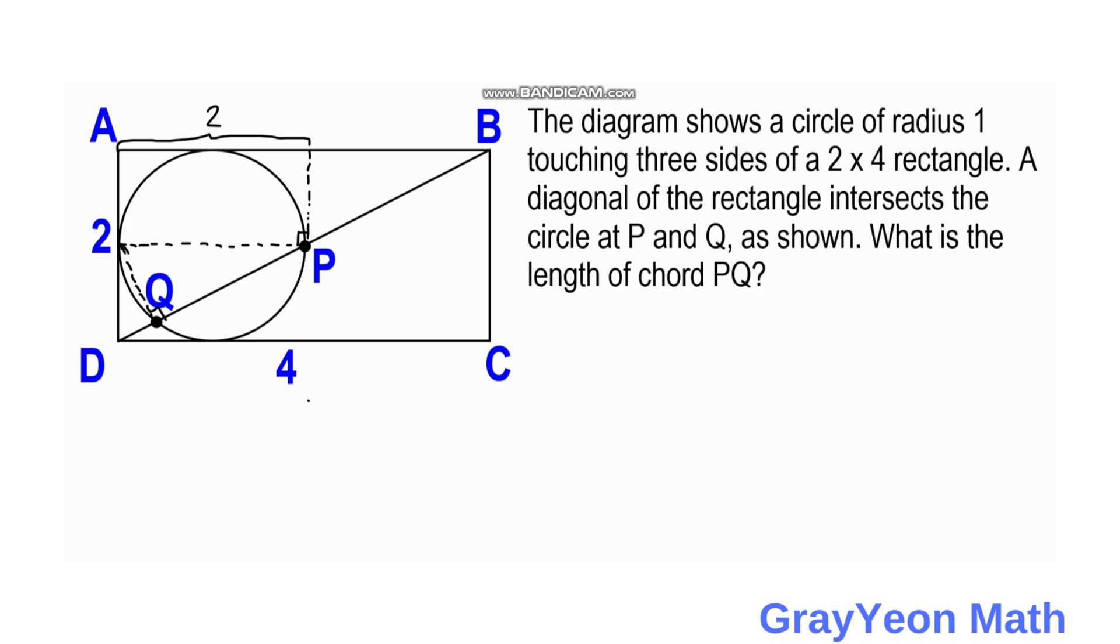So if we try to get the length of the diagonal first, we have to set that BD is actually equal to the square root of BC squared plus CD squared, which is 2 squared plus 4 squared. BD equals the square root of 4 plus 16.